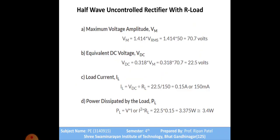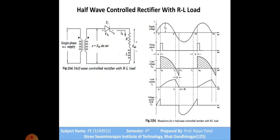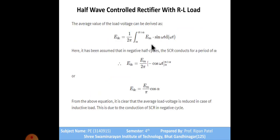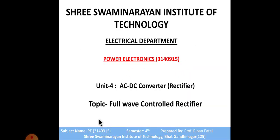First we covered the uncontrolled rectifier - that is the diode bridge rectifier, half wave uncontrolled and full wave uncontrolled. Then we covered the half wave controlled rectifier, where we used only a single SCR with two types of load: purely resistive load and RL load. The output voltage equation was also defined for that. Today our topic is the full wave controlled rectifier.